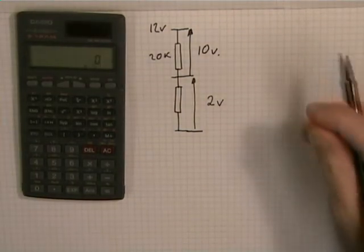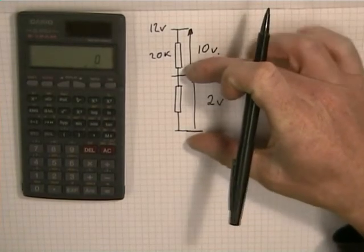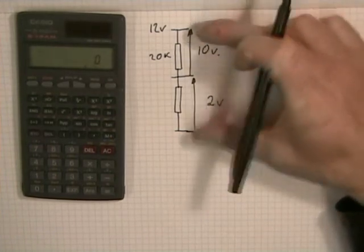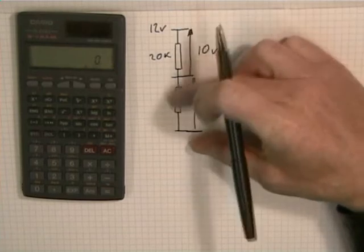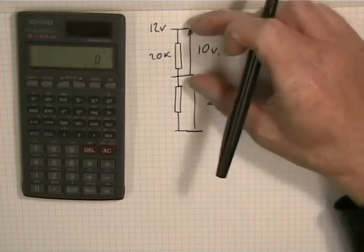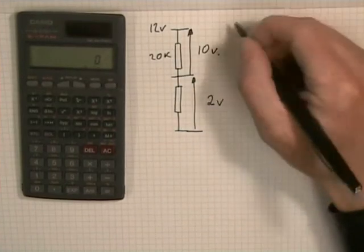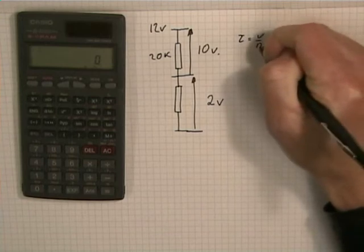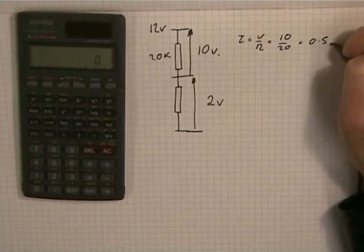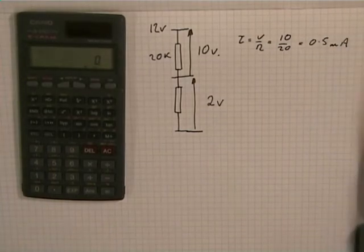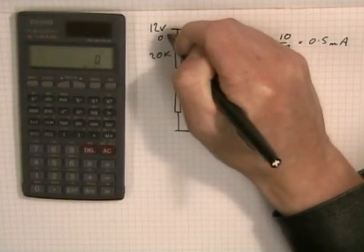Now using Ohm's law, we know only one thing there, the 2 volts, so that's no use to us. Between these two points, we know the voltage and we know the resistance, so up here we can work out the current. So I equals V over R equals 10 over 20, so that's 0.5 milliamps. So we can add that on the diagram, that's 0.5 milliamps.